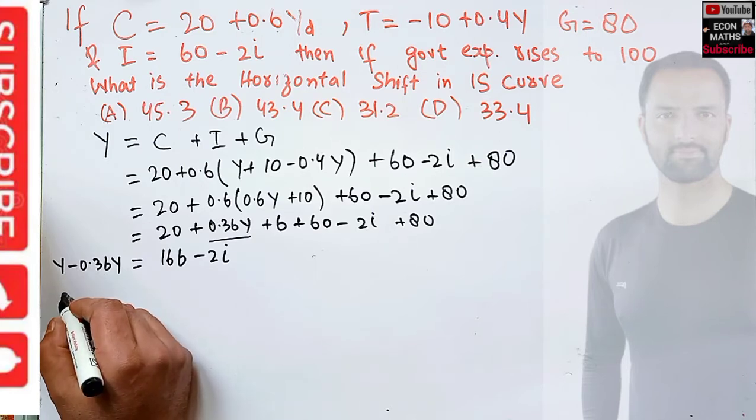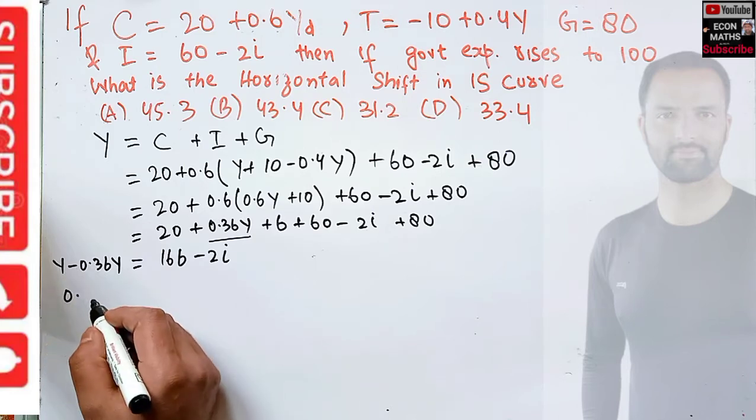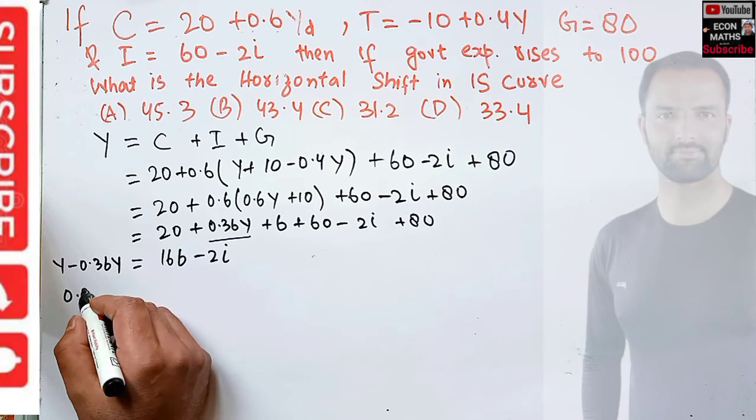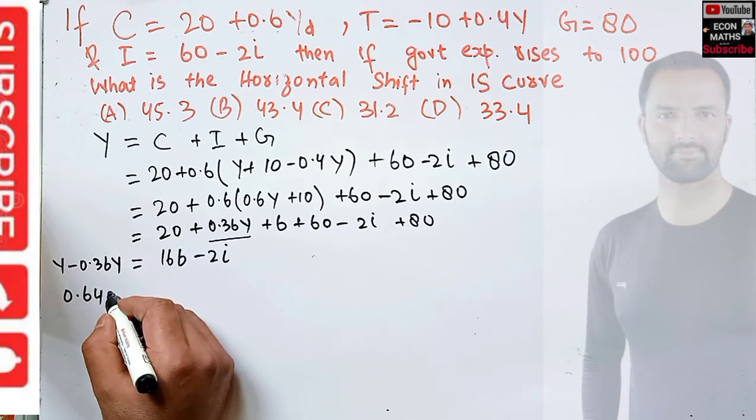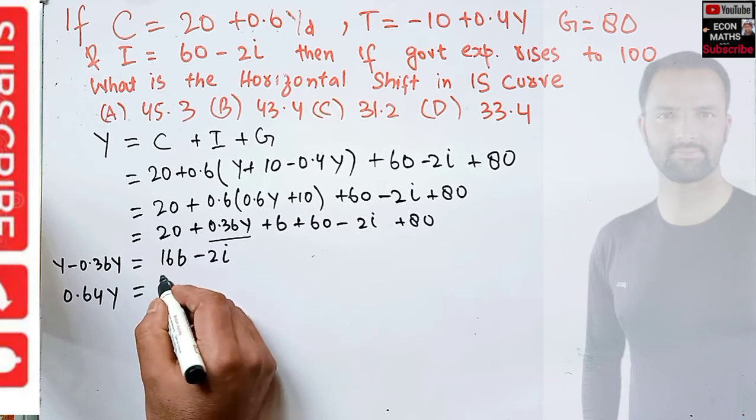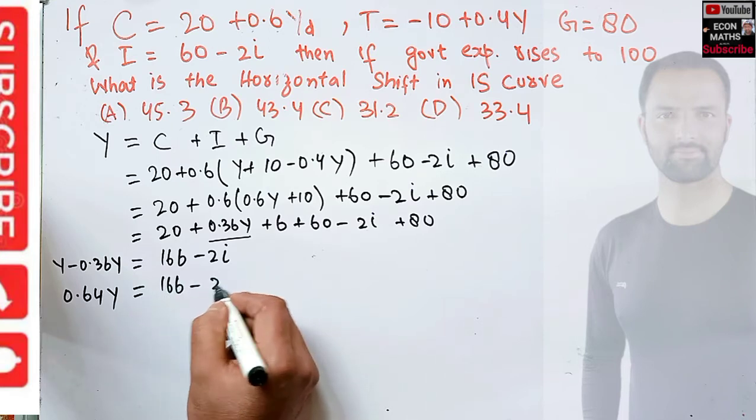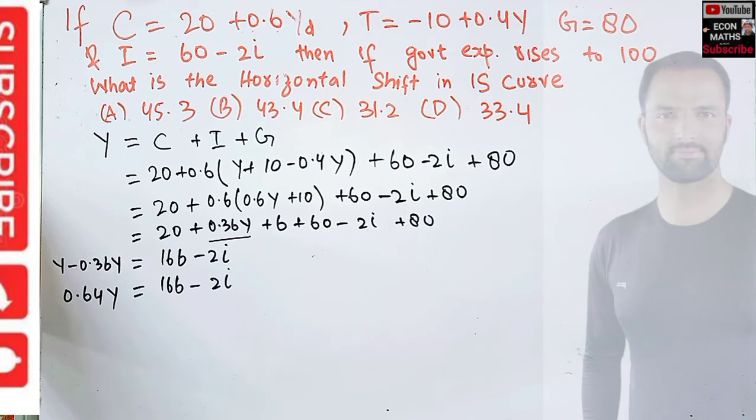So we have 0.64Y = 166 - 2i. This is our IS curve.